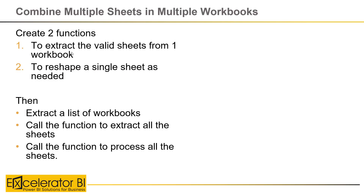Here's the process I'm going to follow. I'm going to extract all the valid sheets from one workbook, turn that into a function, then pick a single sheet, transform it the way I need, and turn that into a function. So I'll have two separate functions. Once I have those, I'll extract a list of all the workbooks to process, call the first function to get the sheet list, then call the second function to process all sheets and combine all the data.